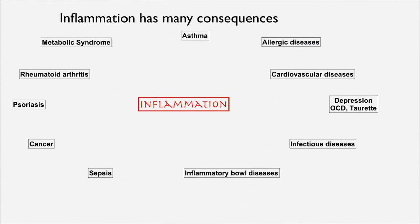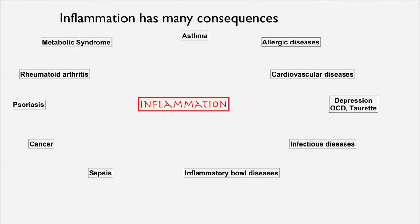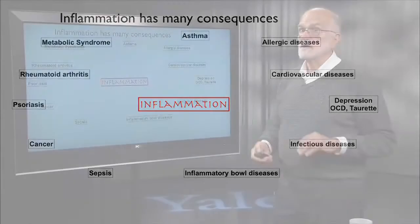Metabolic syndrome, rheumatoid arthritis, psoriasis, cancer, sepsis, inflammatory bowel disease, infectious diseases, depression, obsessive-compulsive disorder, Tourette syndrome appear to be related to inflammation. Cardiovascular diseases have an inflammatory component, as do allergic diseases and asthma. So inflammation is something that is really a central issue in the mediation of cost.